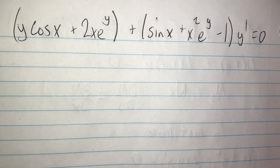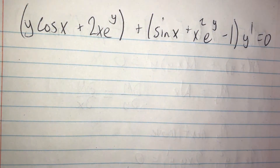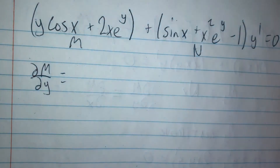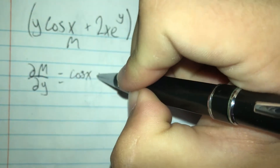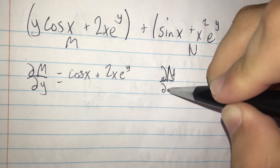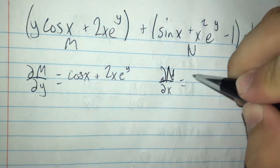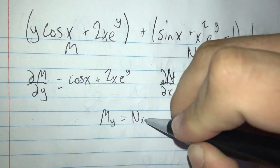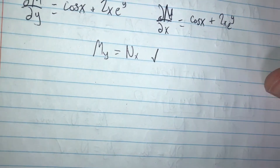Moving to the next problem: y·cos(x) + 2x·e^y + (sin(x) + x²·e^y − 1)·y' = 0. We identify M = y·cos(x) + 2x·e^y and N = sin(x) + x²·e^y − 1. Taking the partial derivative of M with respect to y gives cos(x) + 2x·e^y. Taking the partial derivative of N with respect to x gives cos(x) + 2x·e^y. These match, so My = Nx and the equation is exact.